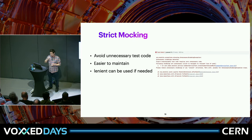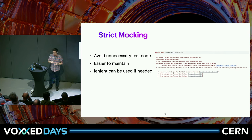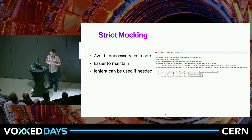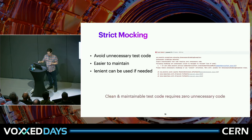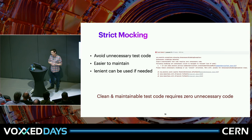I hinted earlier at the strict mocking exception. Mockito developers are quite opinionated, and I think this is really the highest level of that opinionation. If you set up some mock during your test code that doesn't get used by your test — the function is never invoked — that was an unnecessary piece of code, and Mockito will fail your test. Their stance is: clean and maintainable test code requires zero unnecessary code. Of course, you can work around it with the lenient option to disable this behavior.